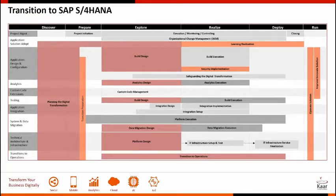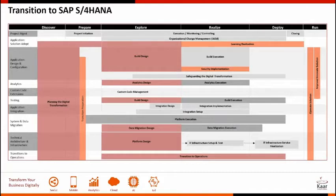In project management, the primary activities are common project and quality management tasks, organizational change management, and enablement of the project team. Solution adoption focuses on the training strategy, learning, and enablement of end users so they are ready to use the new S/4HANA solution. Design and configuration is where the fit-gap analysis happens — understanding the existing ECC processes and how they can be adapted for S/4HANA. Data volume management is also a key activity in this phase.